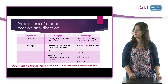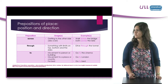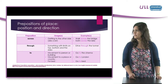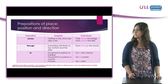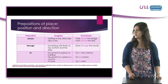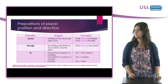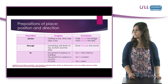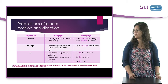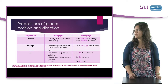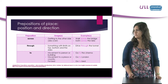The preposition ACROSS, with the usage of getting to the other side, for example walk across the bridge or swim across the lake. The preposition THROUGH, something with limits on top, bottom, and on the side, for example drive through the tunnel. The preposition TO, with the usage of movement to a person or building, for example go to the cinema, or movement to a place or country, for example go to London, or go to bed.